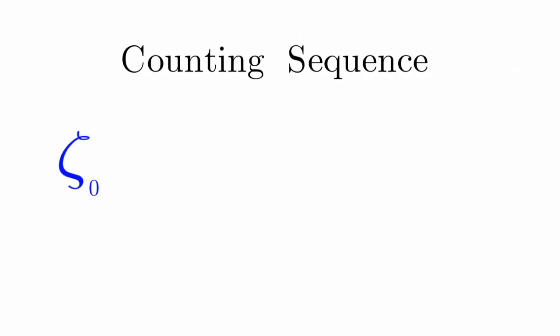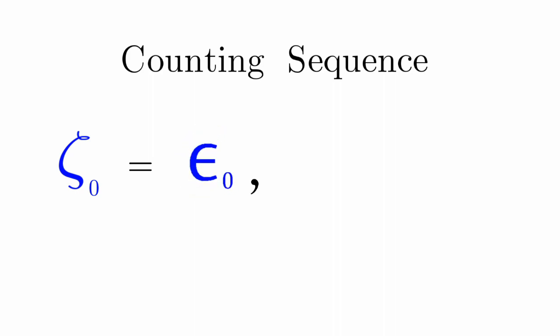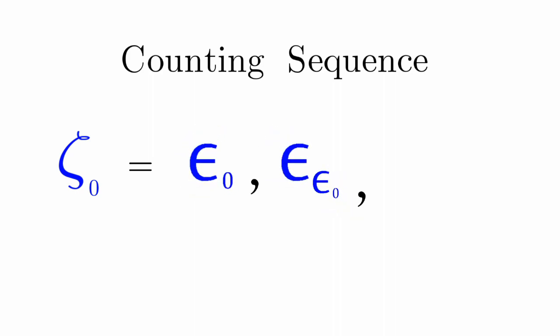The counting sequence for zeta naught is equal to epsilon naught, epsilon epsilon naught, epsilon epsilon epsilon naught, and so on and so forth.